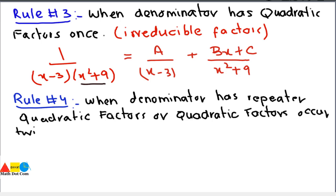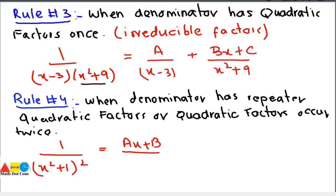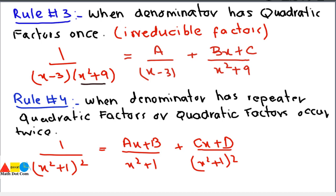Rule number four is the last rule: when the denominator has repeated quadratic factors, or a quadratic factor occurring twice. For example, 1 divided by (x²+1) squared. You can write this as Ax+B divided by (x²+1) plus Cx+D divided by (x²+1) squared, where you have to find A, B, C, and D for finding the partial fractions.